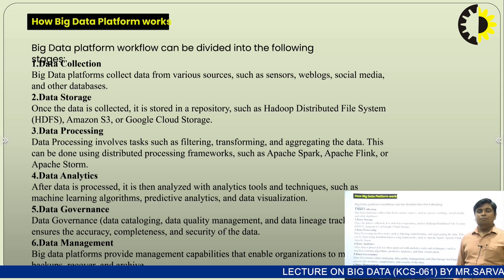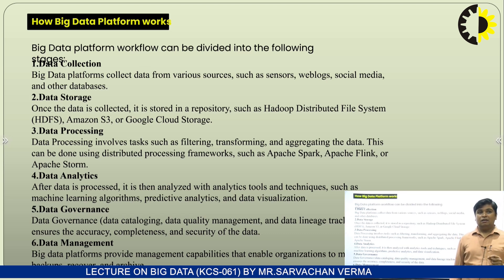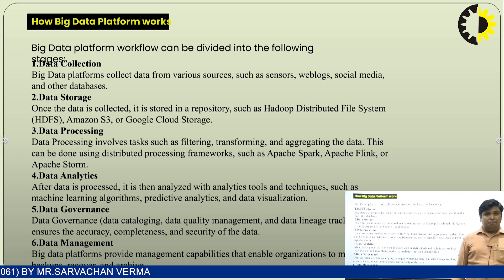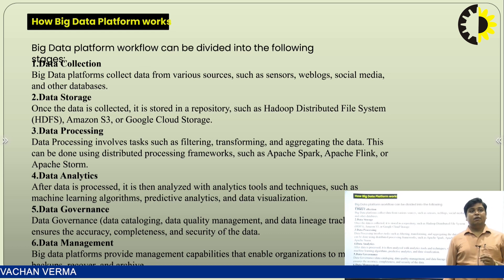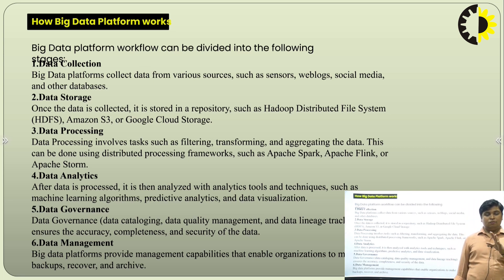Now, how does a big data platform work? Basically, the big data platform workflow can be divided into the following phases. The first phase is data collection — big data platforms collect data from various sources such as sensor data, web logs, social media data, and other databases. The second phase is data storage — once data is collected, it is stored in a repository.